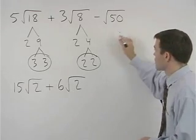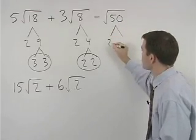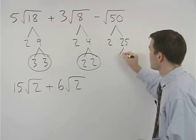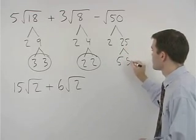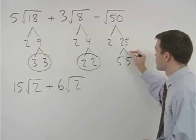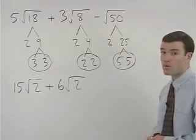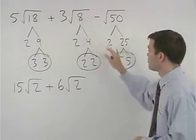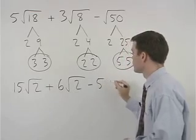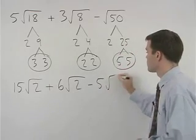In the last term, 50 factors as 2 times 25, and 25 is 5 times 5. So a 5 comes out of the radical, and we have minus 5 times the square root of 2.